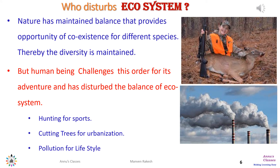Nature provides equal opportunity for the existence of different species and also maintains diversity. But this balance is disturbed by human beings, who kill certain species just for the pleasure of hunting, cut trees — thereby destroying places for many birds to live — and cause pollution through urbanization, thus disturbing the balance of the ecosystem. Here we complete this portion of the chapter.